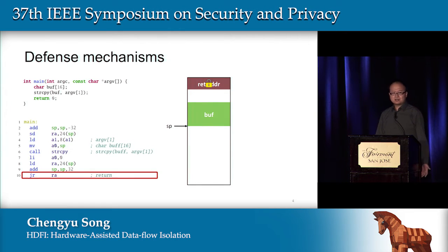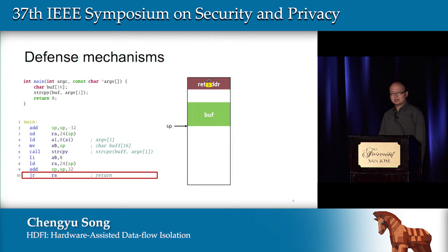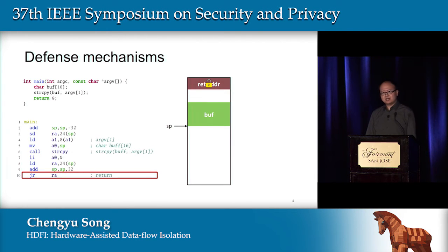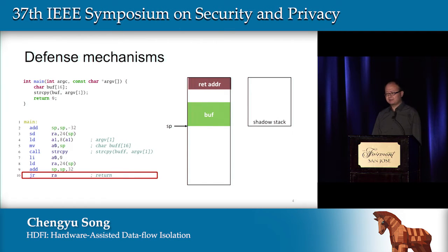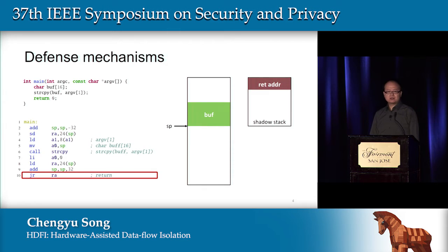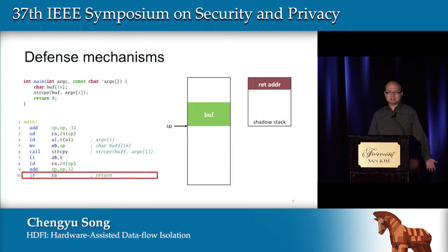Alternatively, we can also try to encrypt the return address. So even if an attacker can compromise the return address, they cannot control the decrypted value. The challenge here is key management — basically, if we ever reuse the encryption key, the encryption scheme can be broken and the attacker will win again. Finally, we can also try to relocate the return address to a shadow stack and isolate it using different approaches, including software-based and hardware-based.